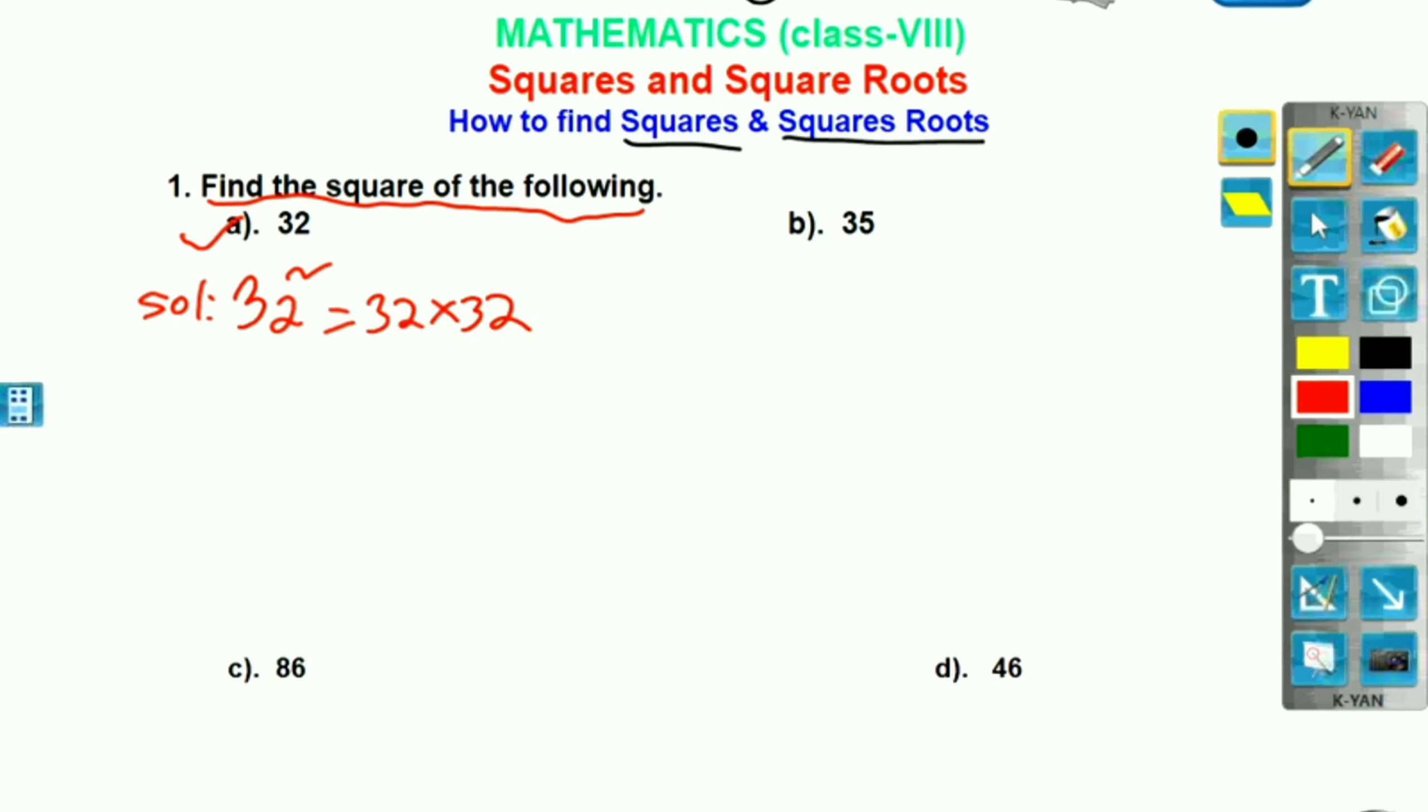And I am going to multiply this number. So, 32 into 32. 2 twos are 4. 2 threes are 6. 3 twos are 6. 3 threes are 9. So, 4. 6 plus 6 is 12. Carry 1. 9 is 10. So, our answer is 1024. This is our answer.